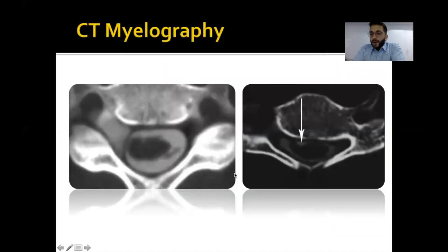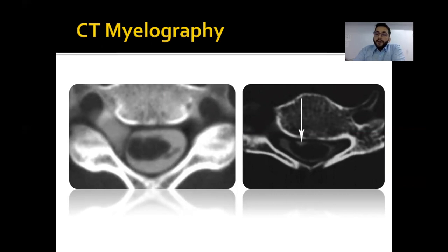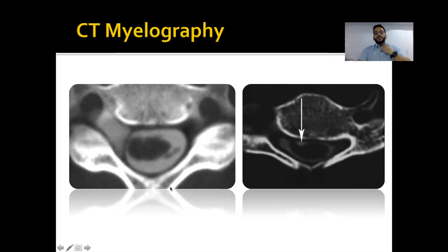Sometimes CT myelography is required — for patients in areas where MRI is not available, or patients with pacemakers who cannot urgently undergo MRI. In such cases, CT myelography can be used. This is a patient with similar findings: the ventral and dorsal rootlets are seen on the left side but not on the right, and there is contrast pooling in a pseudomeningocele sac — confirming nerve avulsion on CT myelography.